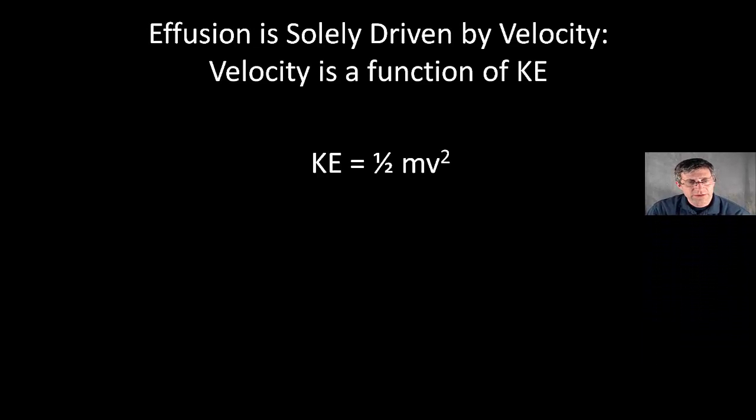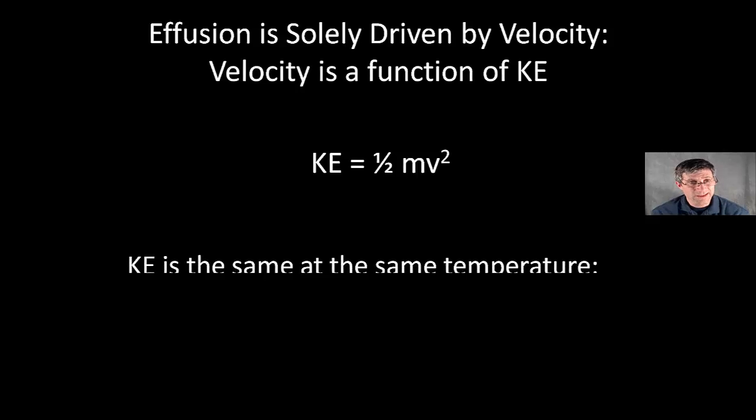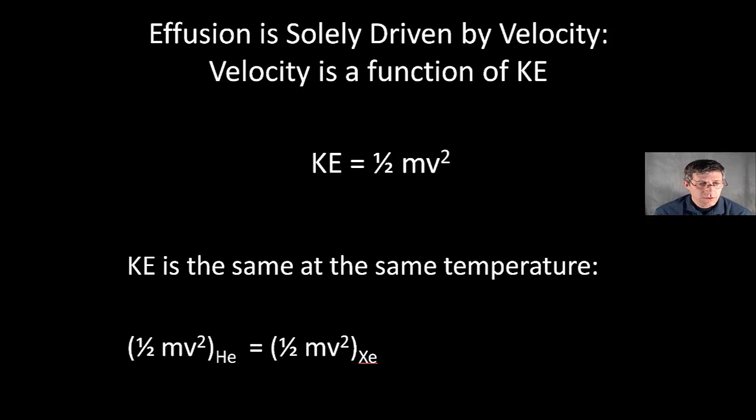Effusion is solely driven by velocity. And velocity is going to be a function of kinetic energy. And kinetic energy, according to the KMT, is we have higher temperatures, kinetic energy increases. But at the same temperature, two masses, two different gases, will have the same kinetic energy. And we'll use this to take advantage and make comparisons between the two. So formally, we can write that the kinetic energy of one gas, say helium, is going to be equal to the kinetic energy of another gas, say xenon in this case. And by setting their kinetic energies equal to each other, we can make predictions about how differences in their masses and their velocities will be affected. And we can figure out the difference in their velocities, and we can make predictions about what is the difference in effusion rates.